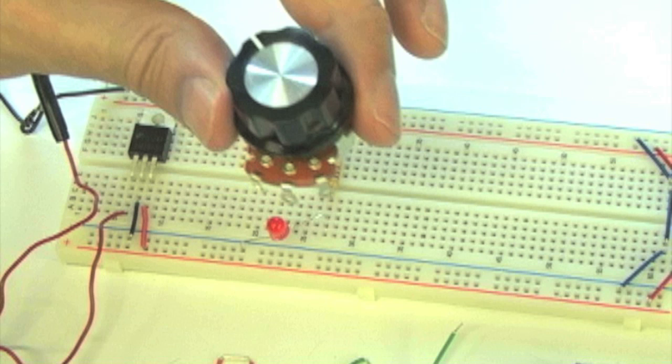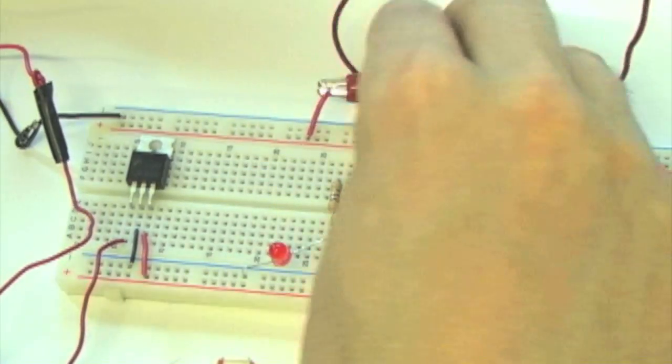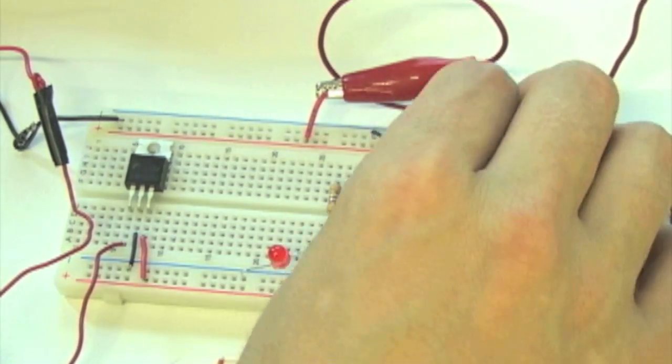Let's try connecting voltage to the LED using a potentiometer. This allows us to change the amount of current flowing through the circuit, and therefore change the brightness of the LED. Connect a red alligator clip to a wire sticking out of the voltage rail. Do the same with a black clip, connecting it to the ground rail.